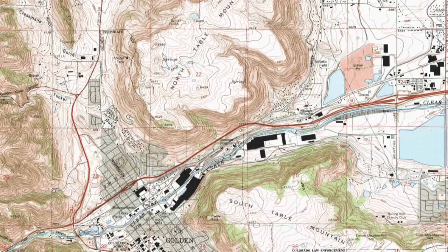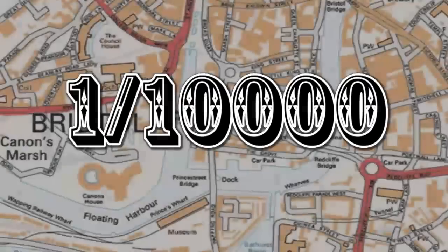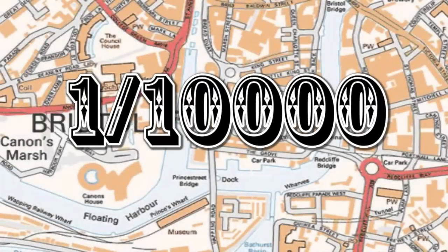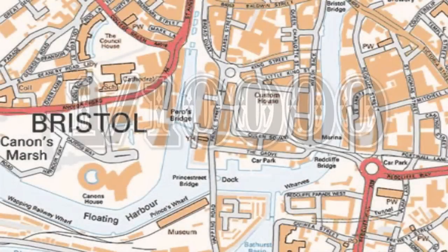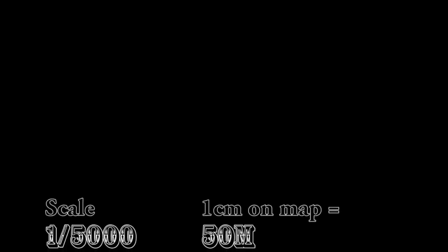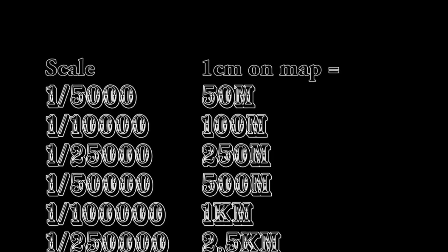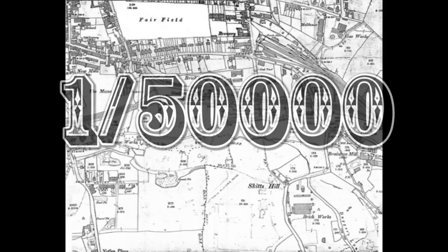Looking at it from the fractional scale, we reference the scale of the map from the size of the fraction. Smaller denominators result in a larger fraction, and we call such maps large scale maps. We can see more detail in a large scale map, but less area. With larger and larger denominators of scaling, the fraction gets smaller and smaller, and so we call these small scale maps. We can see less detail in the small scale map, but we can see a greater area.